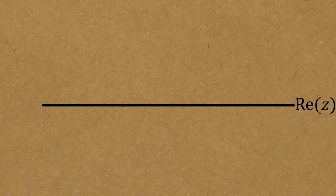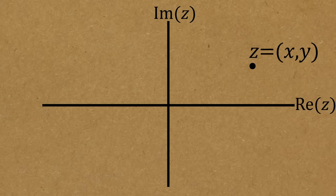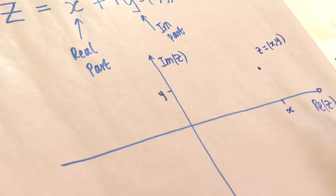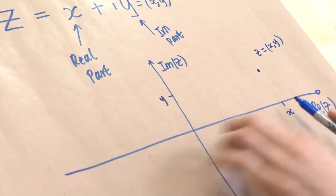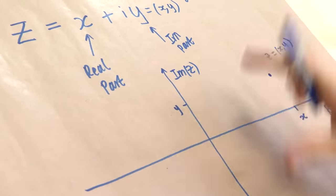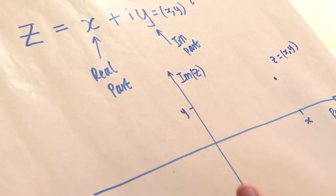The best way to think about complex numbers is to draw a graph. The x-axis is the real part of z, and the y-axis is the imaginary part. I can represent my complex number as a point in 2D space with coordinates x, y — go x across and y up. This position z equals the point (x, y) in 2D space, and it uniquely defines the complex number. That's one way of representing a complex number.